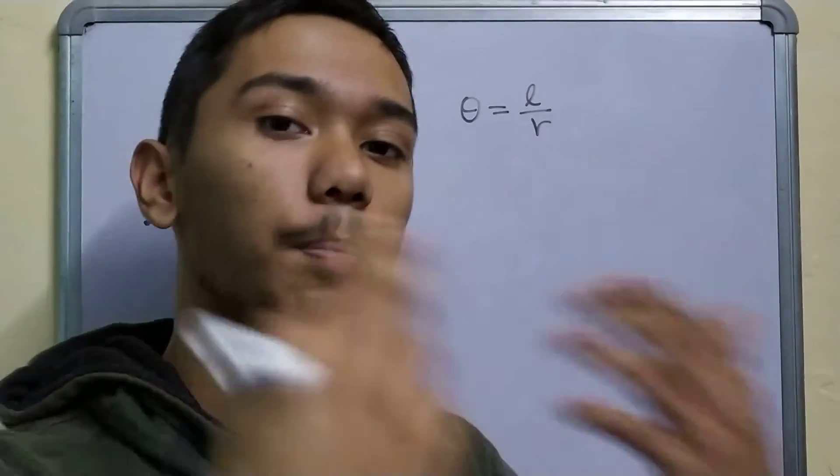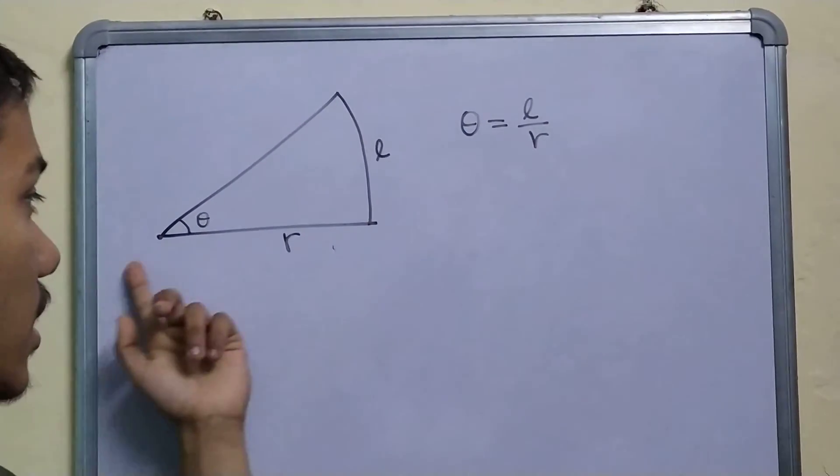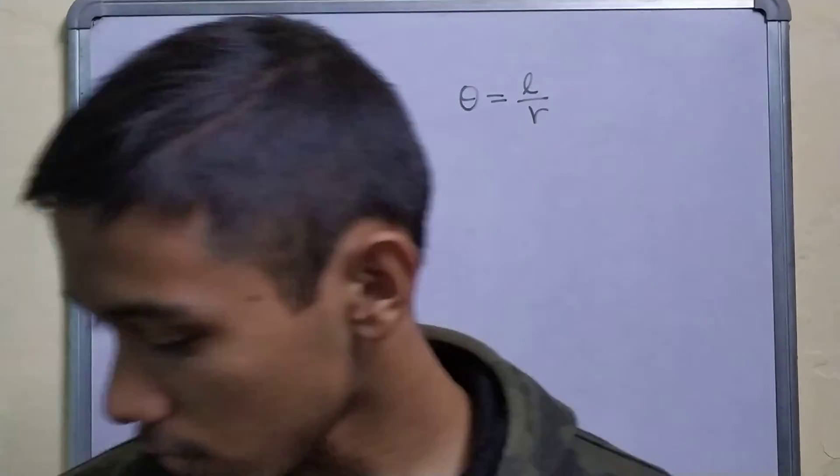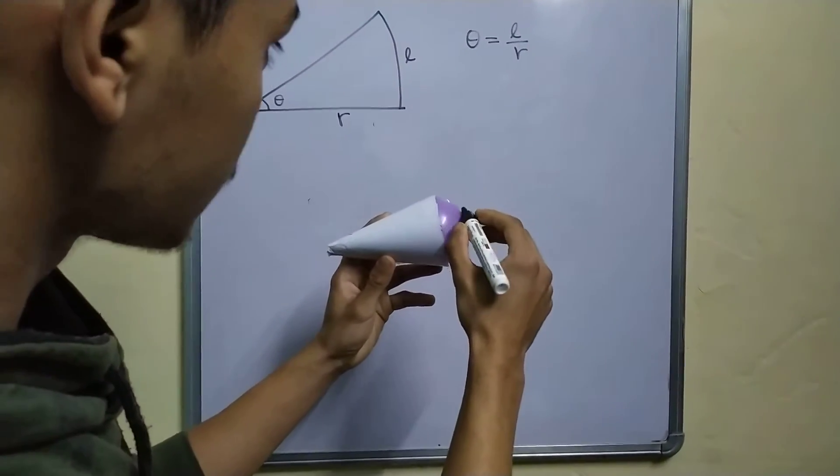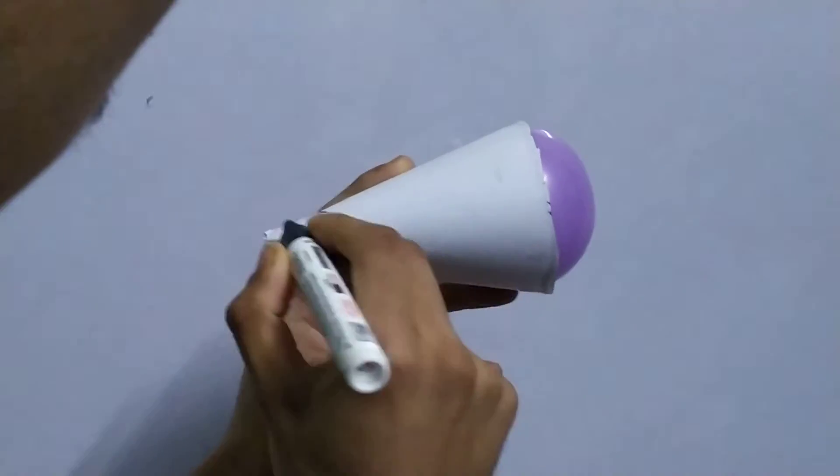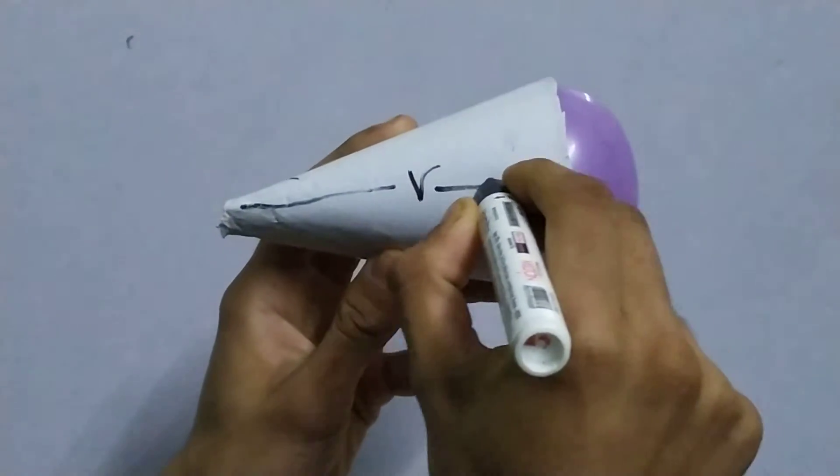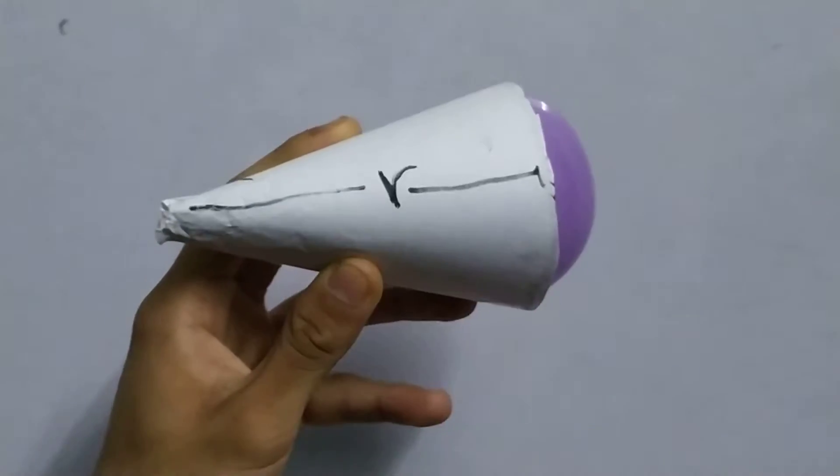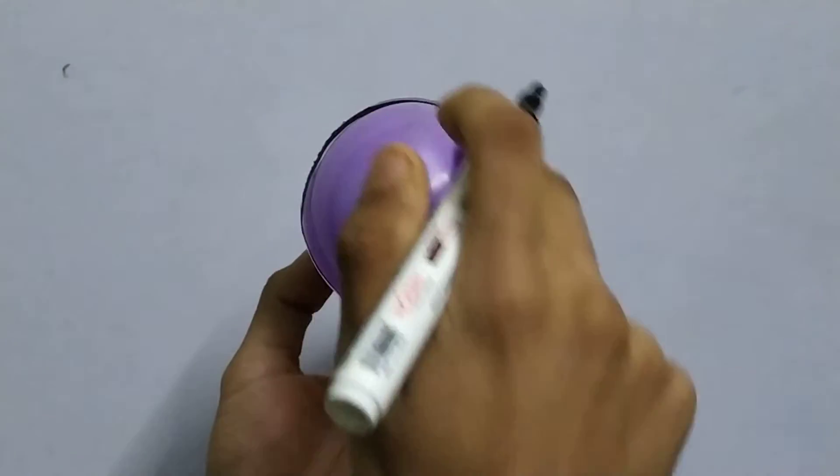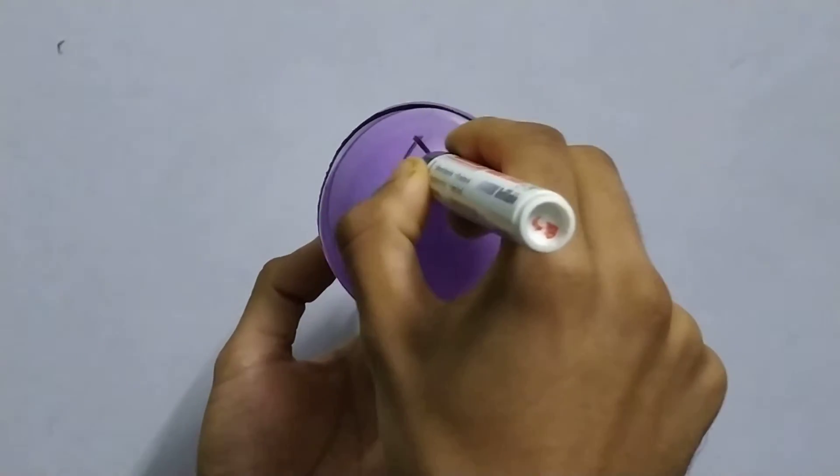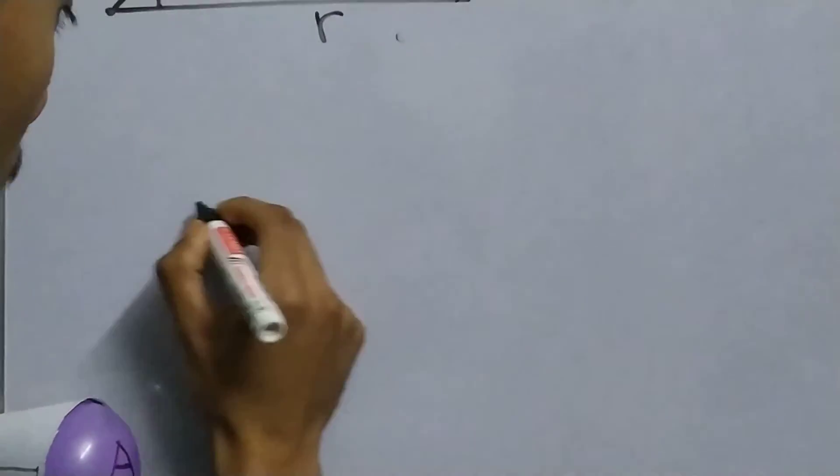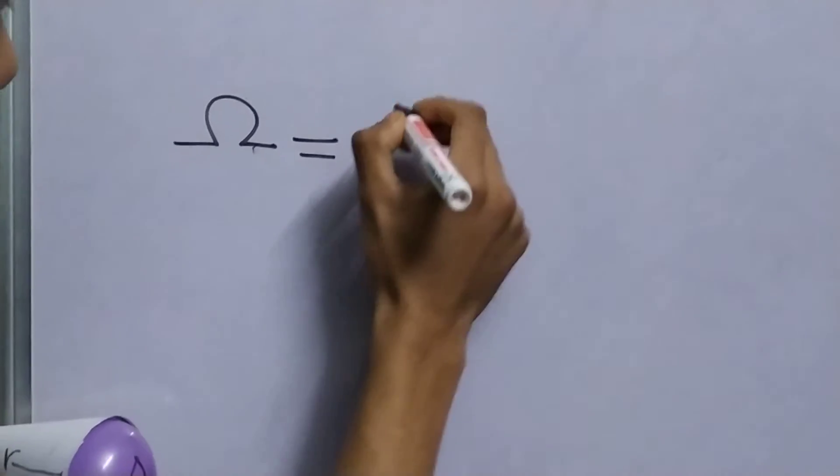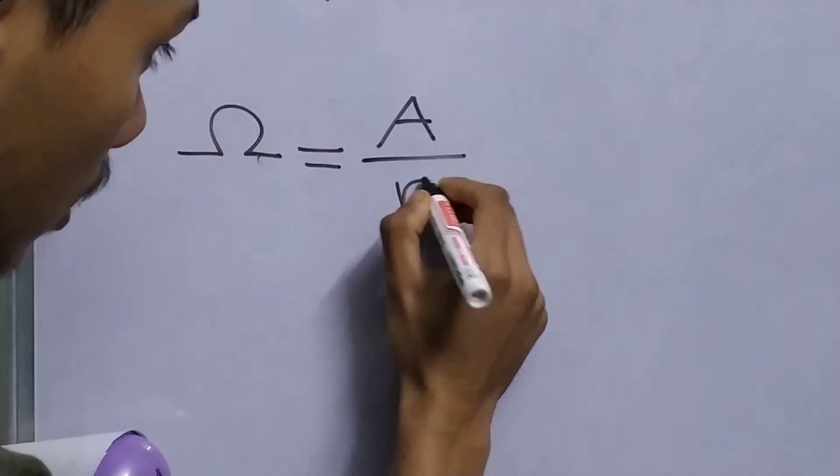Now, let us go further up a dimension. Instead of measuring length, we shall measure the area. Instead of dividing by R, the distance, we shall divide by distance square. Here is a nice thing for visualizing. Let us say this curve part is at a distance of r. And this surface, the surface of this balloon here has an area A. We define the solid angle as omega equal to the area divided by R square.